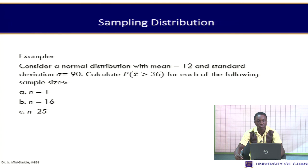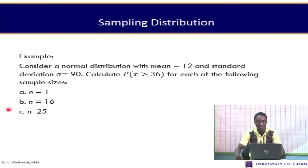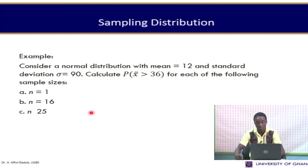Consider a normal distribution with mean 12 and standard deviation 0.9. Calculate the probability that x-bar is greater than 36 for each of the following sample sizes: when n equals 1, when n equals 16, and when n equals 25. Since the population is normally distributed, the collection of samples will also be normally distributed irrespective of the sample size.